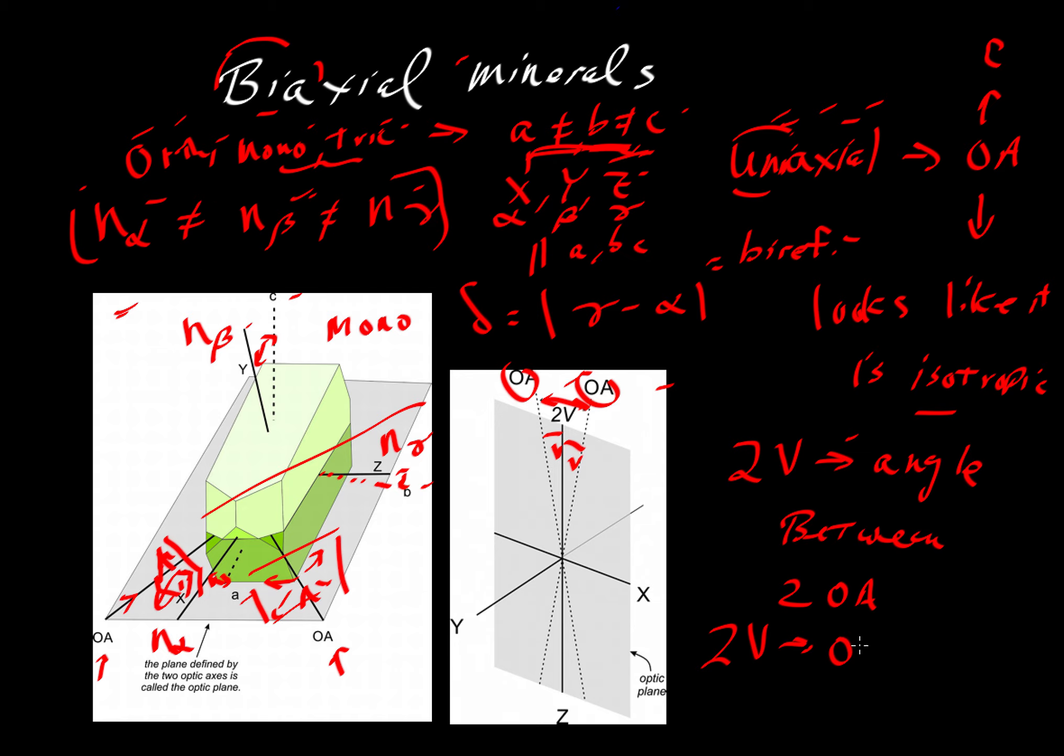We have the birefringence, just like we do for the uniaxial, where we take maximum and minimum values and we look at their difference. And then we have this third optic property, 2v. These are all things that we can identify in the microscope and look up in the textbook and use as a way to identify minerals using the petrographic microscope.